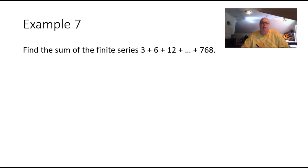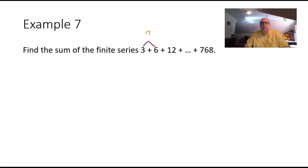Example 7: find the sum of the finite series 3 plus 6 plus 12 plus ... plus 768. First, find the common ratio: 6 divided by 3 is 2, and 12 divided by 6 is also 2, so r equals 2. The sum formula is s_n equals a1 times (1 minus r to the n) divided by (1 minus r). We know a1 is 3 and r is 2, but we are missing n.